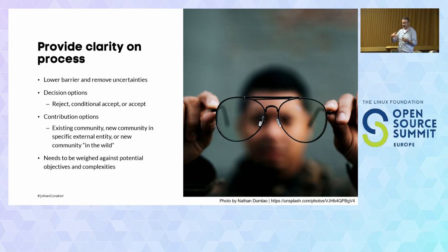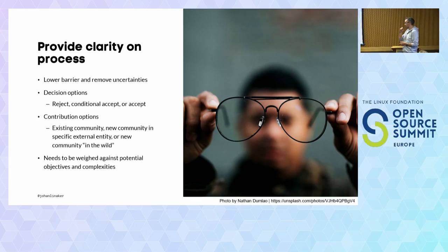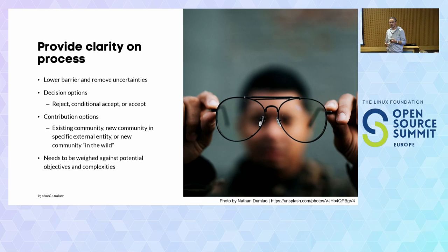They maybe just need to know the status of the actual contribution request. Certain decision options could be: reject — no, we can't open source this; conditional — we could open source this, the enablers, the qualifiers, but not the secret sauce, that's these 10 percent; or accept — we can contribute this. Then there are different options: do you want to submit it to an existing community, a new community within a certain external entity such as a foundation or ecosystem, or should you just release it into the wild?